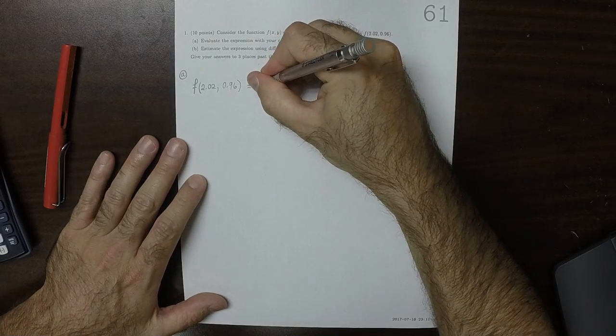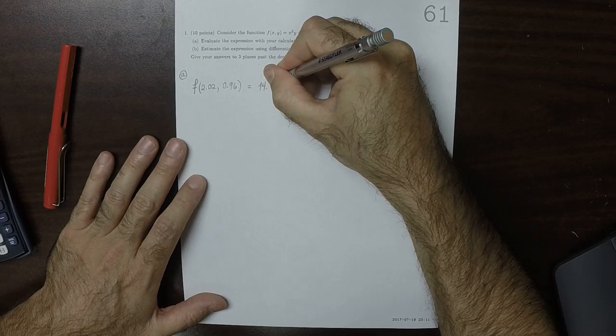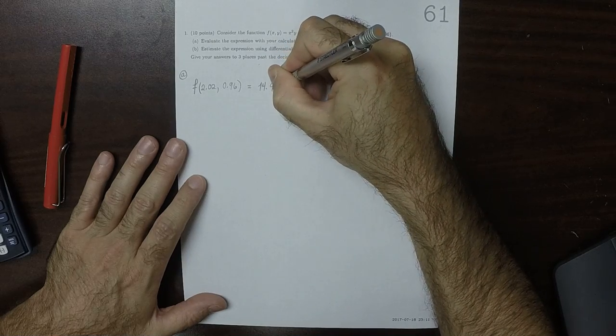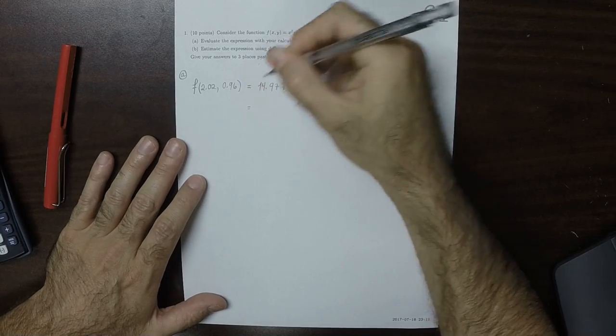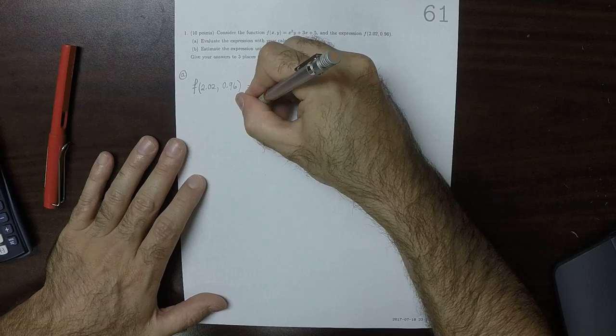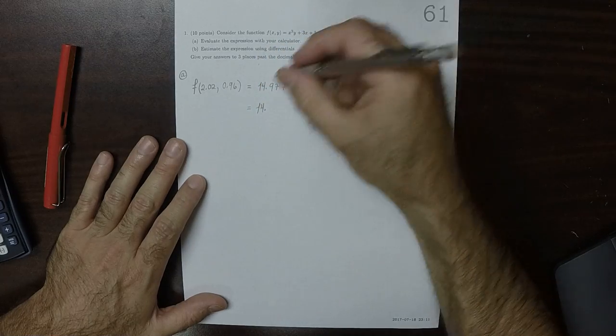So according to the calculator, that's 14.977184, which, rounded to three places past the decimal, is 14.977.